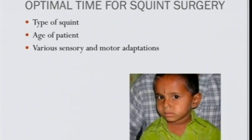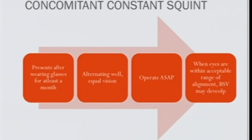The optimal timing for squint surgery depends on the type of squint, age of the patient, and various sensory and motor adaptations. Also important: check fixation and refractive error. If the patient is amblyopic, always treat the amblyopia first. In concomitant squints — hyperopic accommodative and myopic exotropic — operate as early as possible once eyes are within acceptable alignment range, as binocular vision may develop.